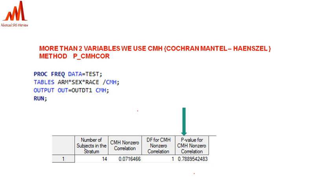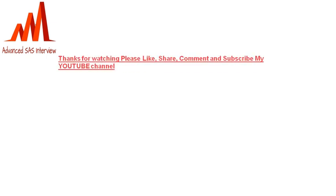These are the methods generally used for getting the p-value using PROC FREQ. In an interview, if they ask whether you have worked on p-values, you can say: 'Yes, I derived p-values using PROC FREQ procedures — chi-square, exact (Fisher exact), Mantel-Haenszel, and Cochran-Mantel-Haenszel methods. These are the methods I used in my company.' Thanks for watching — please like, share, comment, and subscribe to my YouTube channel so I can provide more informative interview questions.